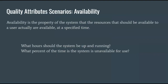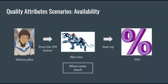Our first attribute is availability — the percentage of the time the system should have its lights on, up and running. An example scenario: when a Voltron pilot presses the on button, the blue lion, despite being under attack, should start up 95% or more of the time. Here, the source is the pilot, the stimulus is pressing the on button, the artifact is the blue lion, the environment is when under attack, the expected response is start up, and the response measure is 95%. Note that the response measure is a number of some sort.